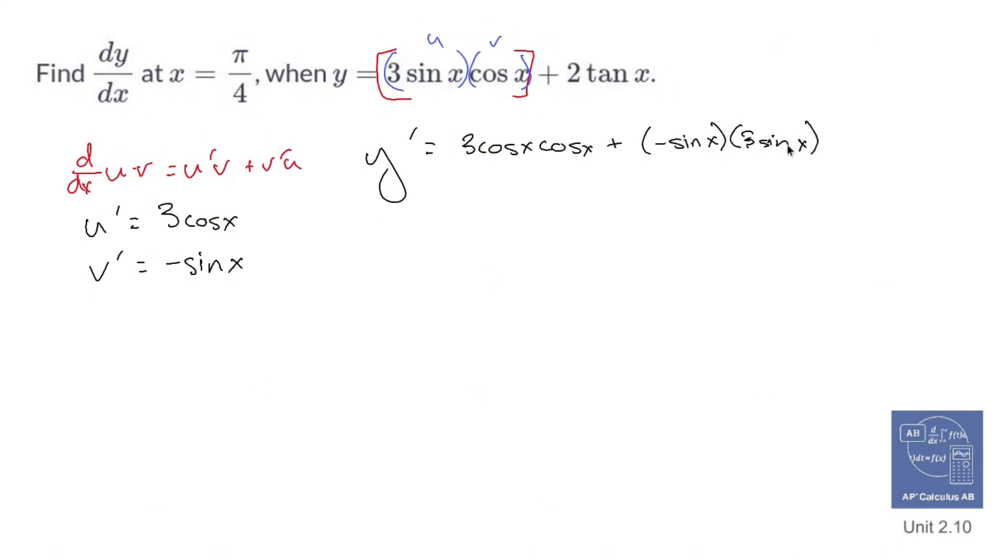And then plus 2 times the derivative of tangent is going to be 2 secant squared x.